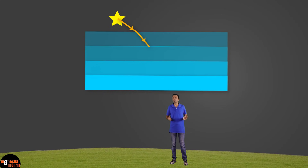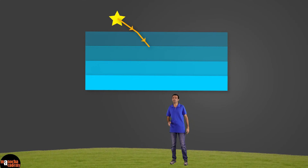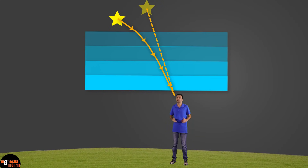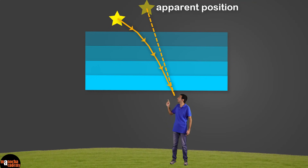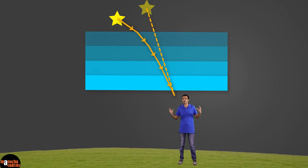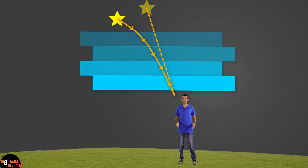As we discussed, the atmosphere is made up of many layers having different densities, and bending of light also takes place at the boundaries of these layers. So the light from the star that reaches our eyes has gone through many many refractions. If we trace back the light, the star appears at a different position from its actual position — the apparent position of the star is higher than its real position. This takes place due to atmospheric refraction. But remember, the layers of the atmosphere are constantly shifting and changing.